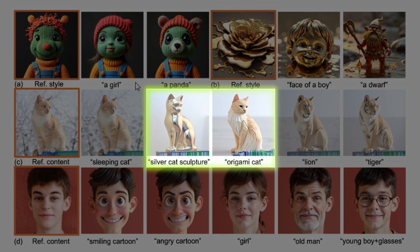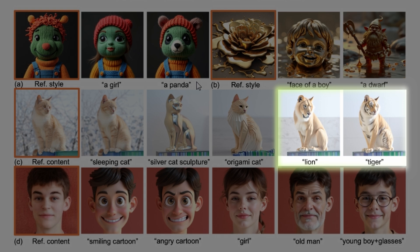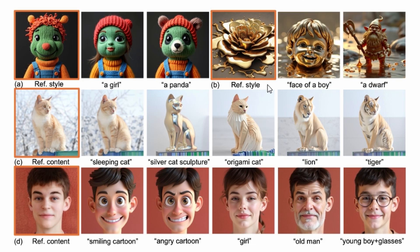In these cases, it changes just the cat while preserving the overall pose. You can also see examples with a lion or a tiger. There's no need for inpainting or control net.